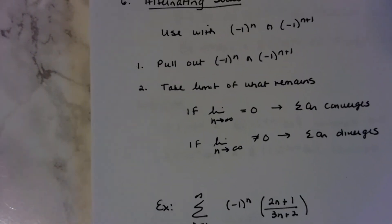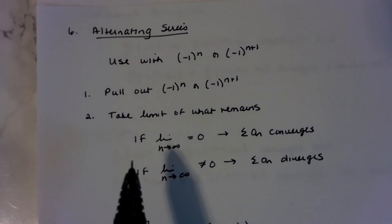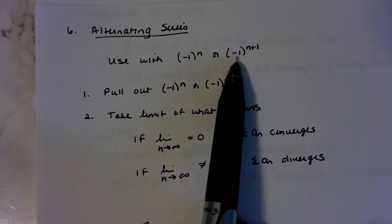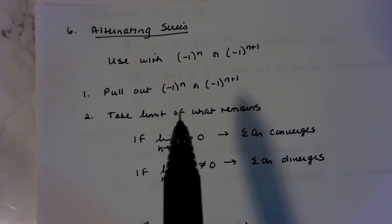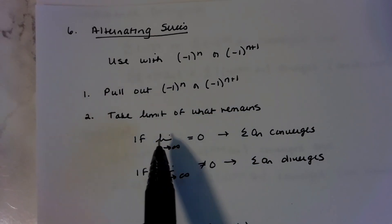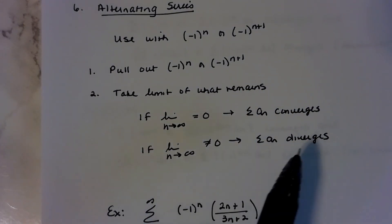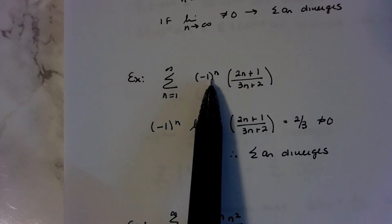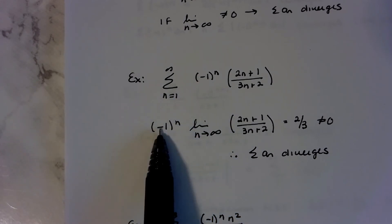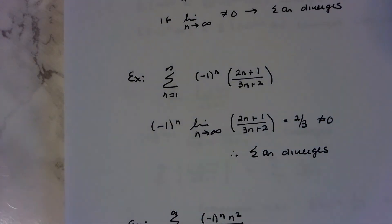That brings us to alternating series. We use this when we see negative 1 to the n, or negative 1 to the n plus 1 — or really any constant power, like n minus 3. The idea is: pull out the alternating part, take the limit of what's left. If the limit equals 0, the series converges; if it doesn't equal 0, it diverges. Example 1: negative 1 to the n with limit of the remaining part equal to 2 thirds — that does not equal 0, so this diverges.